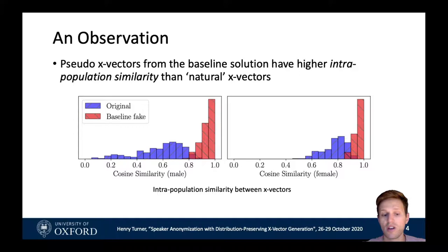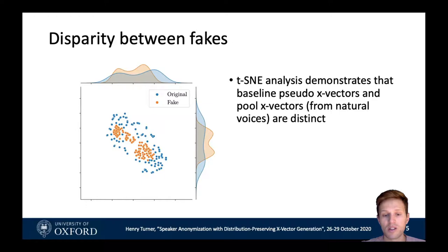We can see this in both of these figures here. For both males and females, the similarities for natural x-vectors from normal people speaking are spread out across the similarity range, whereas the distribution is very concentrated towards the similar end for the fakes. We further looked into this by conducting a TSNE analysis, and when we grouped a pool of all the fakes generated by the baseline system alongside the same number of original x-vectors, we see that the two are almost separable and that the original x-vectors are much more diverse and distinct.